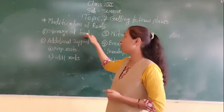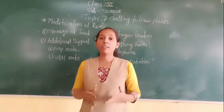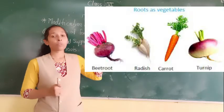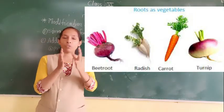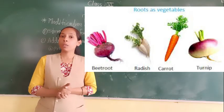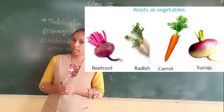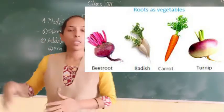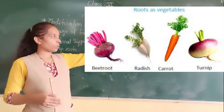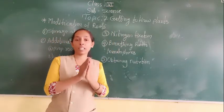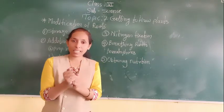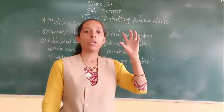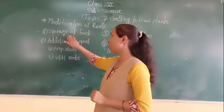First, we will see storage of food. There are certain roots like carrot, turnips, sweet potato, and radish. You can see all these in the image. These are roots which are very thick and swollen in size because they store food in them. That is the reason these roots are called storage roots — they store food and become swollen or thick in size.